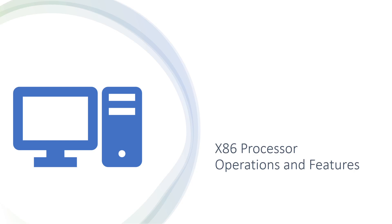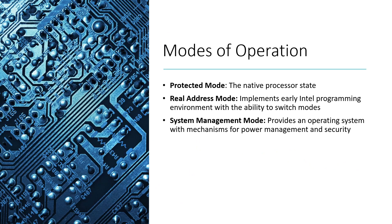Before we start to look at actual programming at x86, I want you to understand a little bit about the different operation modes, as well as the features available for x86 processors. We're going to start off by discussing the different modes of operation. We're mostly going to work in the first mode, which is protected mode, but the other modes do exist and are good to know about in case you're ever working on things like operating systems or hardware.